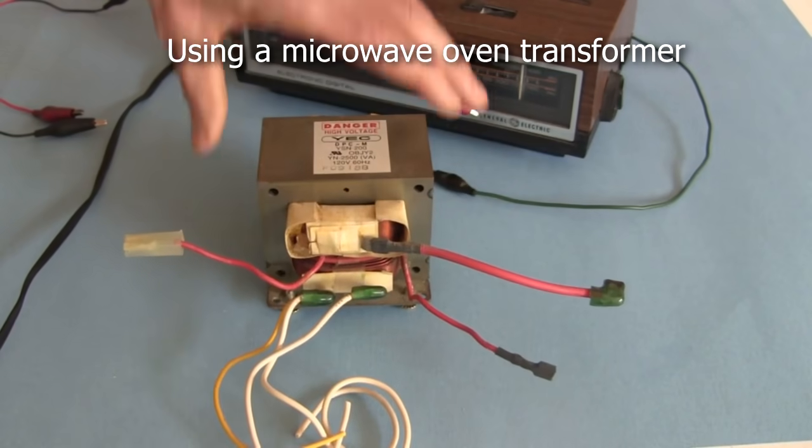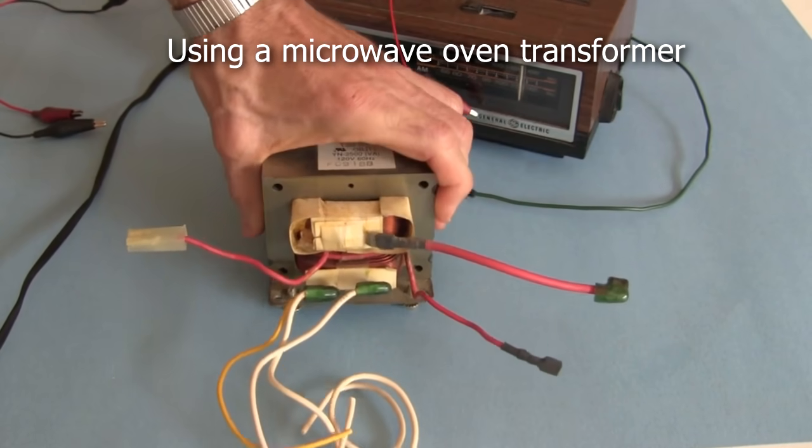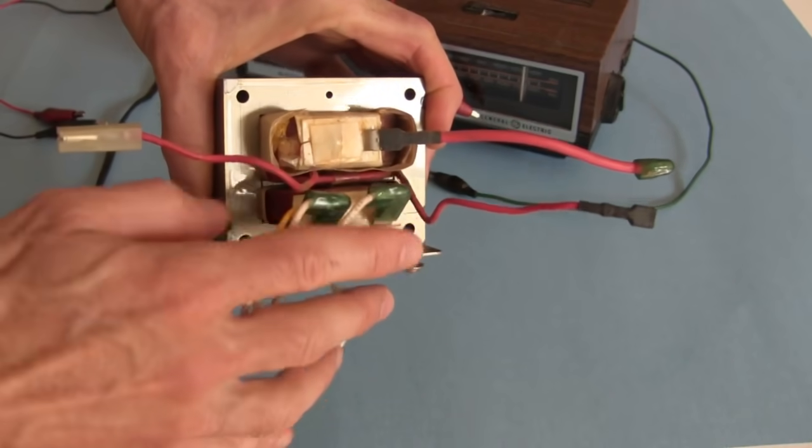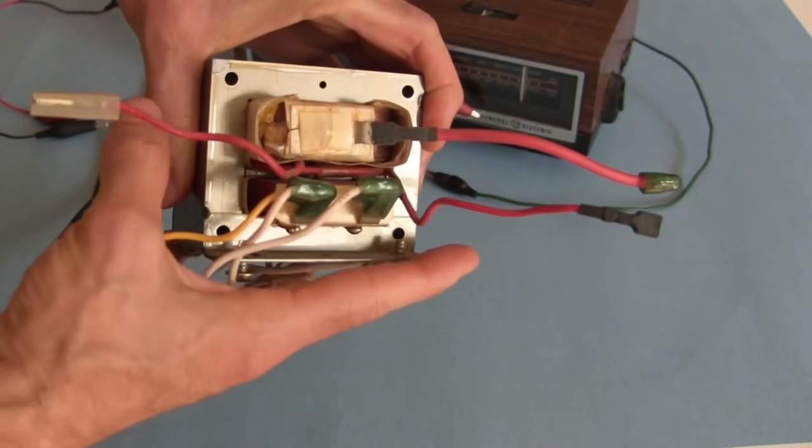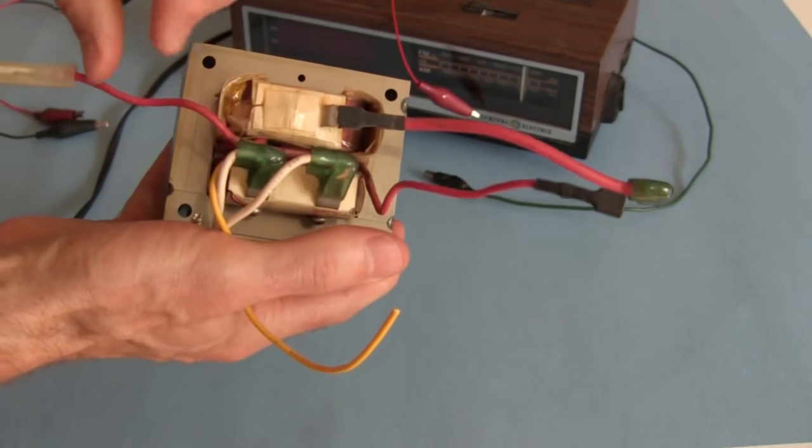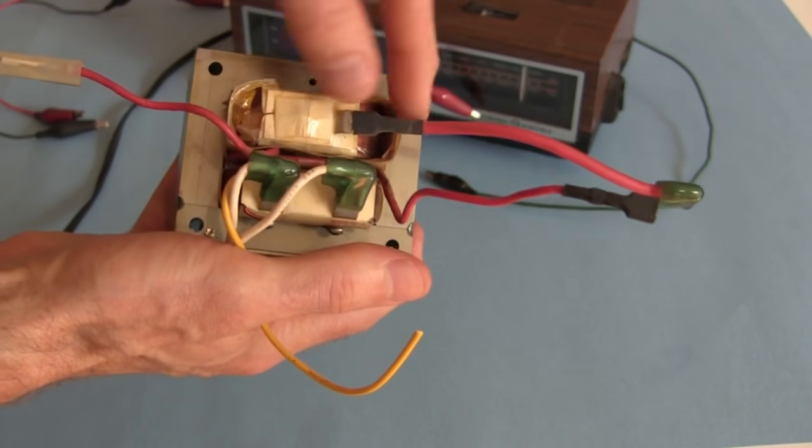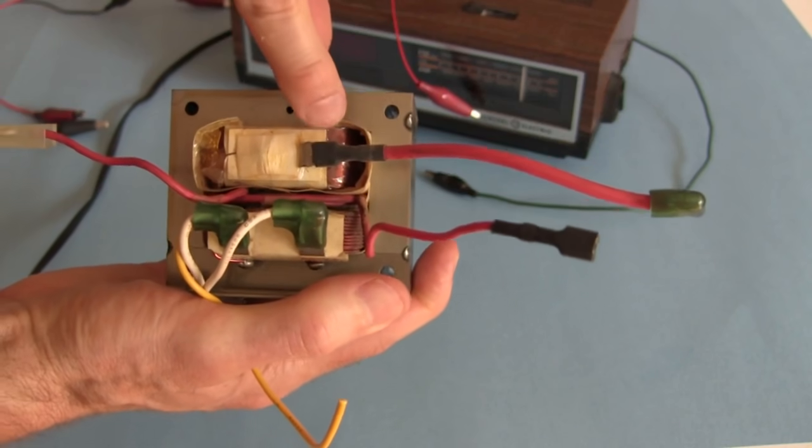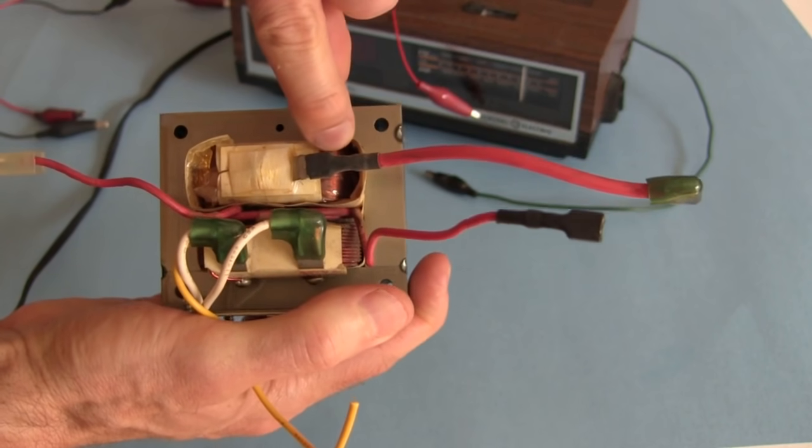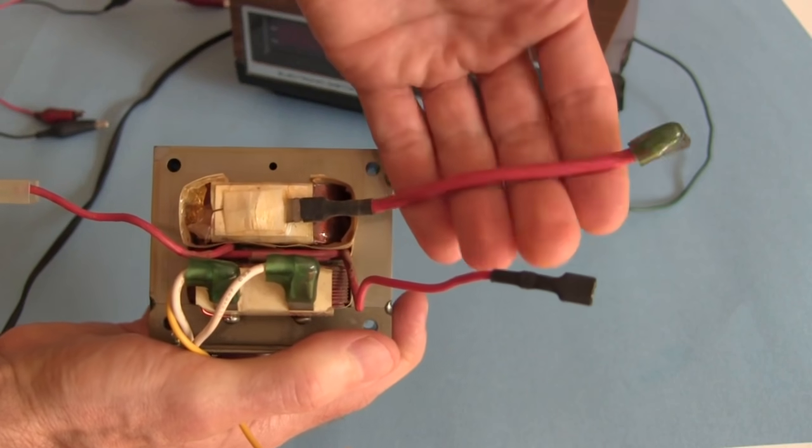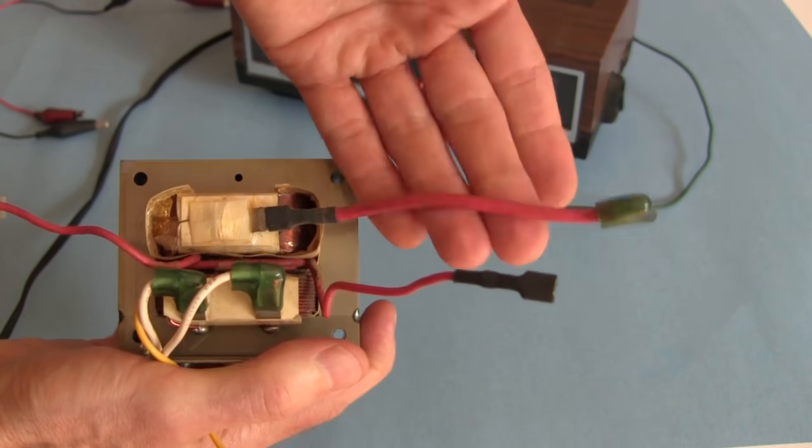This is a microwave transformer which I got from a microwave oven. I'm not going to use these sets of wires down here that are on one set of turns. Instead I'm going to use this big one right here, this is going to be the output. It has a whole bunch of very fine wires for its turns and a very thickly insulated cable.